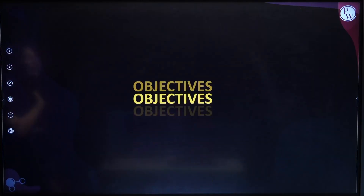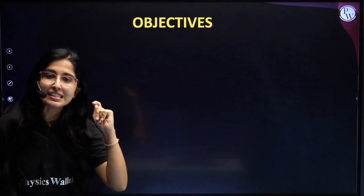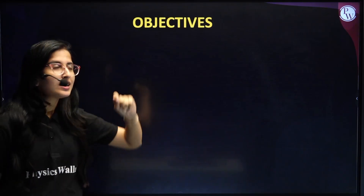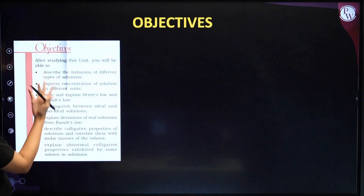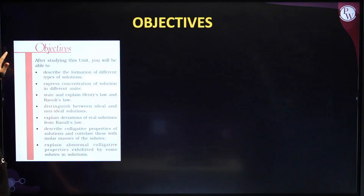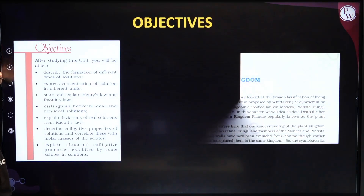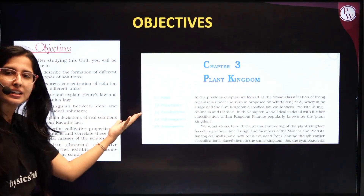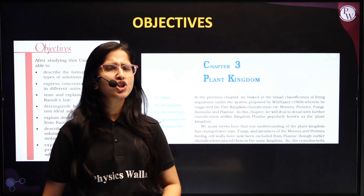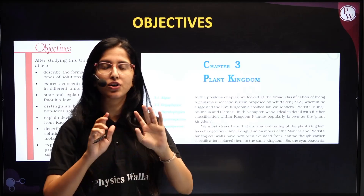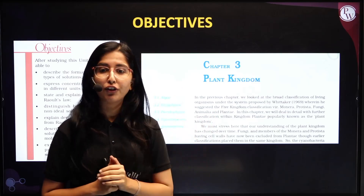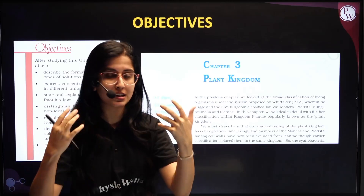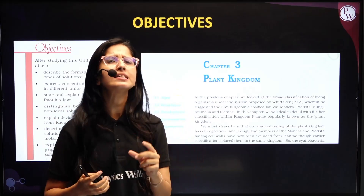The first thing is the objective. For example, in chemistry and biology, the NCERT gives you objectives. Unfortunately, for maths and physics, they are not giving you objectives. For those subjects, you can refer to the summaries instead.